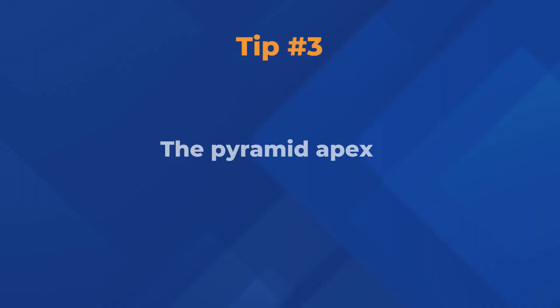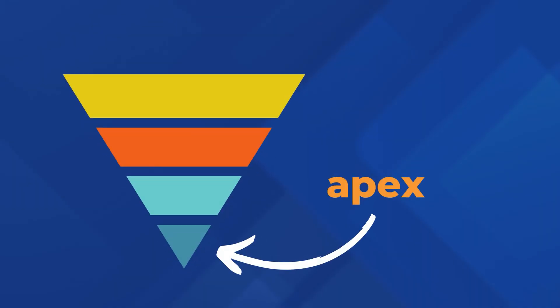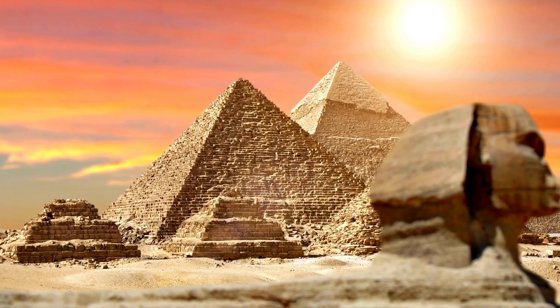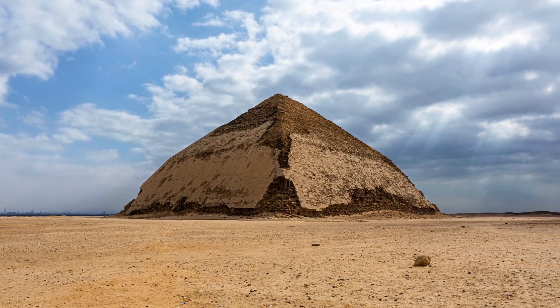Tip number three is what I call the pyramid apex. The apex is at the very bottom of the inverted pyramid, and that's where everything is going — the whole pyramid balances on it. If you get it wrong, the whole pyramid will collapse. There is actually a crooked pyramid in ancient Egypt because the builders miscalculated where the apex should be and had to change it halfway through. The same thing will happen to your paper if you don't think about the pyramid apex and change direction midway — you will never tell a coherent story.